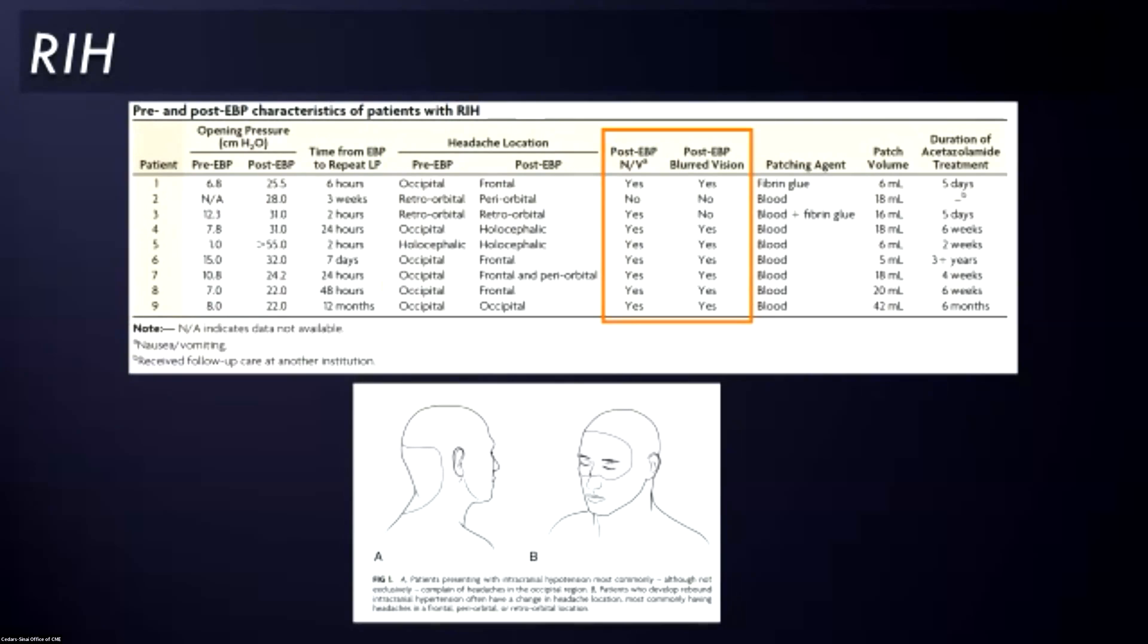What you can see in these columns is that nausea, vomiting is very common among these patients, as is subjective complaints of blurred vision. This is also relatively agnostic to how much volume you use. So this is not purely driven by a volume phenomenon. Some of these patients had volumes as low as 5 milliliters for blood patches, and some of them had much higher volumes. And most patients in this particular series were on acetazolamide for several weeks, although some patients were on them for substantially longer.